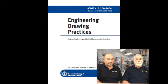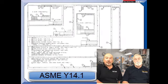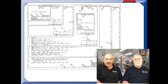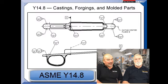The Y14 standards have become the templates for much of today's production, inspection, and CAD software. Your company templates are probably based on Y14-1, which is a standard on borders and formats. Y14.2 is a line convention standard that virtually everyone uses. If you're making casting, forging, or molded parts drawings, you will want to follow the Y14-8 standard.